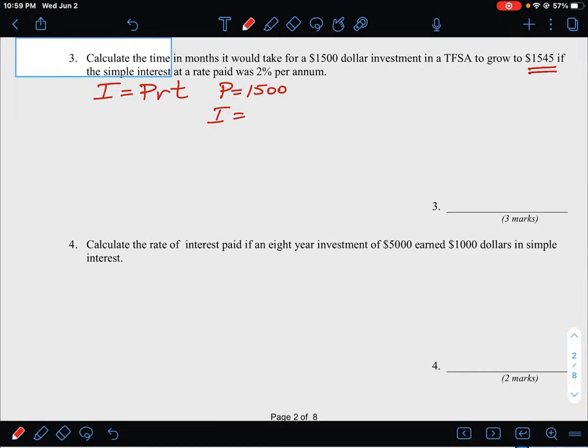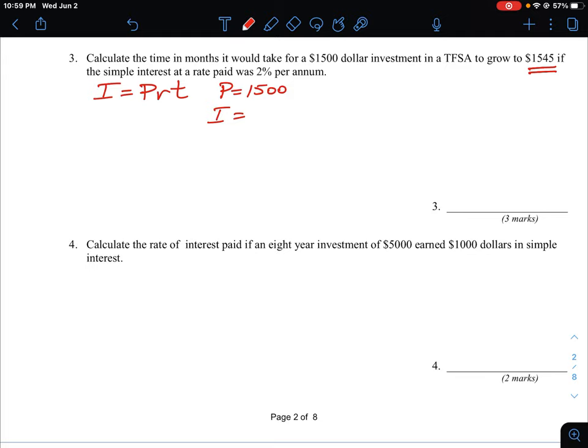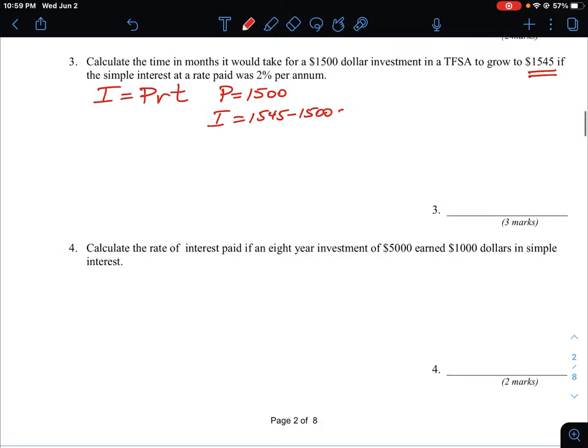So if the total is $1,545 and we invest $1,500, the interest is only equal to $1,545 minus $1,500, which is going to be $45.